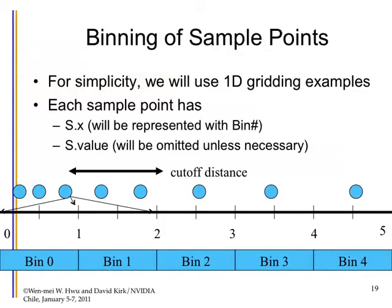Let's go back to binning and connect the sparse techniques into compaction. Assume we have a very simple one-dimensional gridding algorithm with different sparse samples. They are densely distributed in some regions and much more sparsely represented in others. When we bin these things into bins, some bins will have more, some will have fewer, and some will have none. That's where the non-uniform distribution comes into the picture.